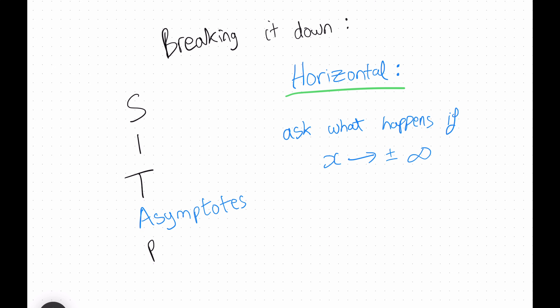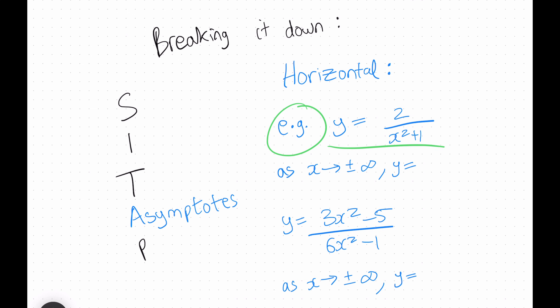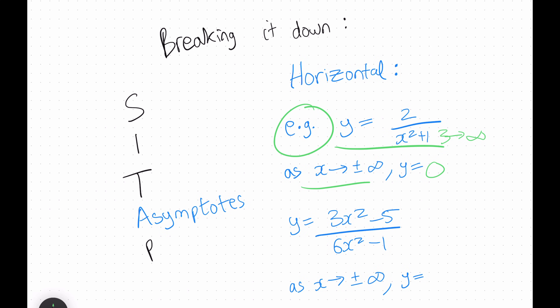For horizontal asymptotes, you ask yourself what happens as x goes to plus or minus infinity. For example, if the denominator tends to infinity, then y tends to 0. As another example, if we're given a rational function, as x tends to plus or minus infinity the lower-order terms get overpowered and the x terms cancel out, so y tends to 3 over 6, which is just a half.